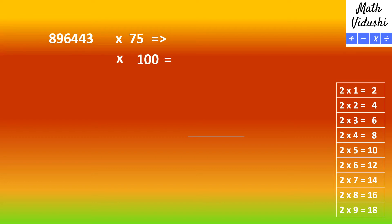896443 multiplied by 75. You would add 2 zeros to this number and get 89644300. Then you would half this number. So you would get 44,822,150.